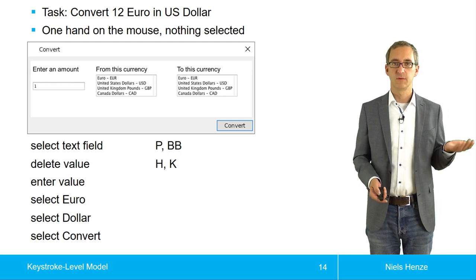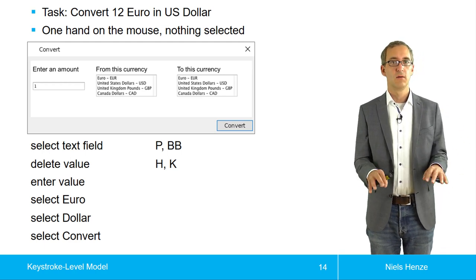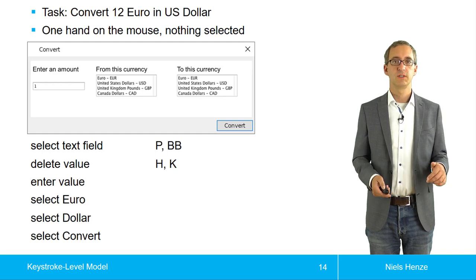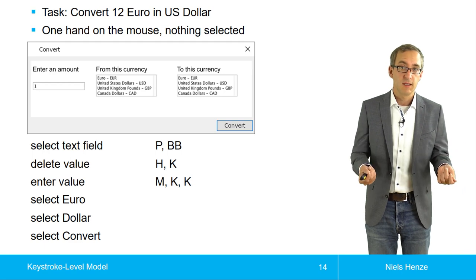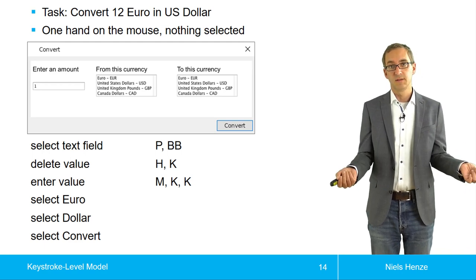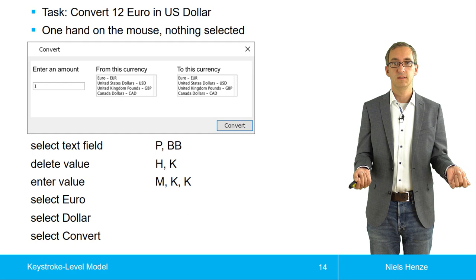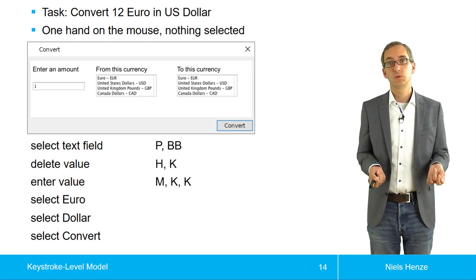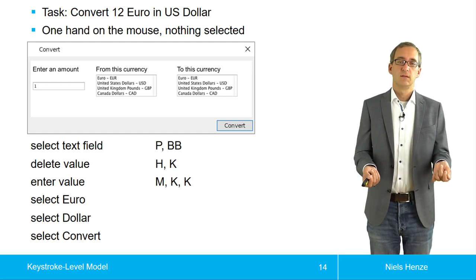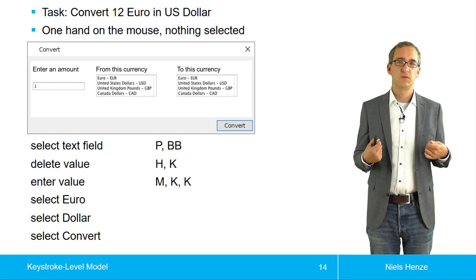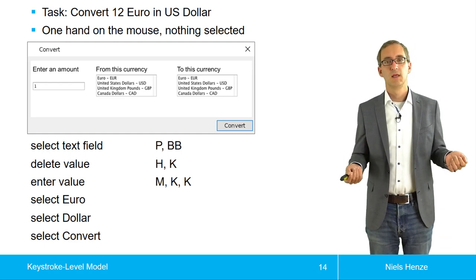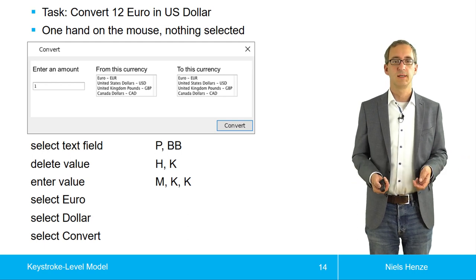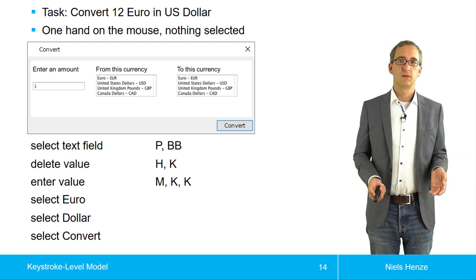Then I want to enter a value. I remember the value was 12. The hands are now on the keyboard, so we just enter the value. Entering the value means two times K, two keys. But in this case, it's assumed that the user might need time to figure out what was the actual value that they wanted to convert. It doesn't take too long, but that might be the case.